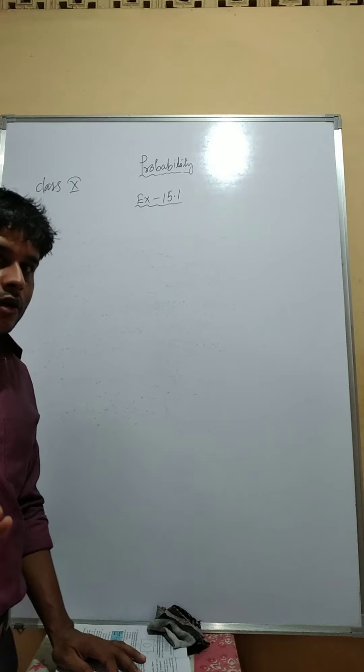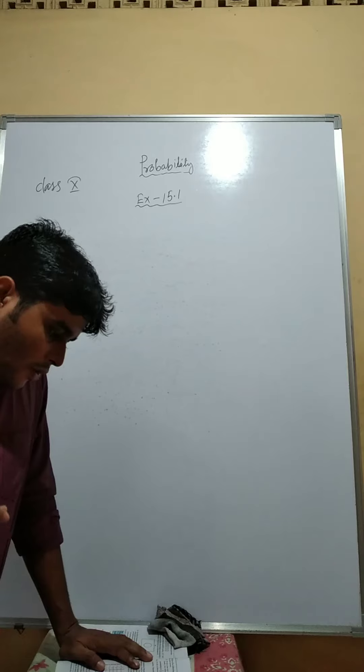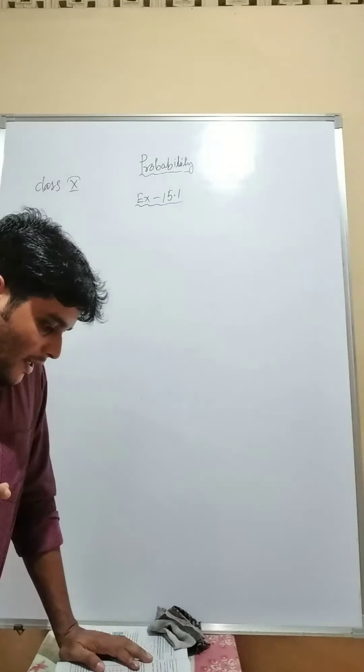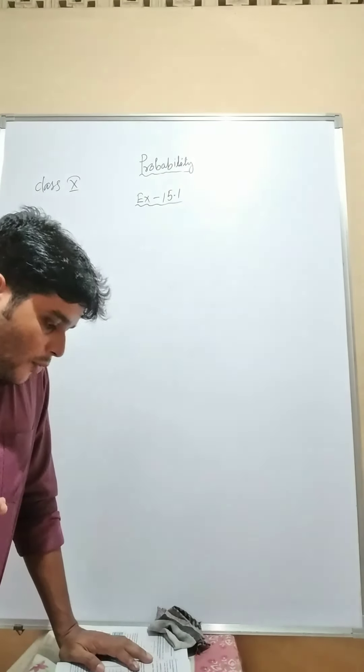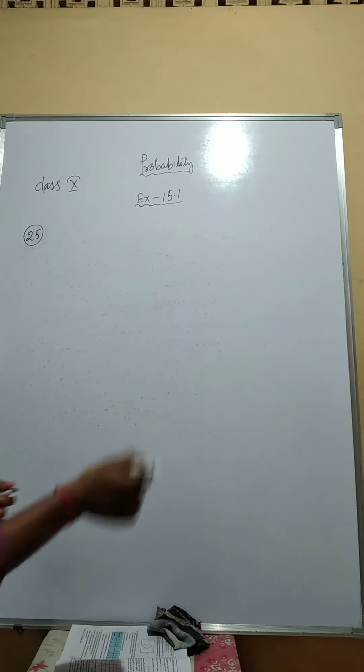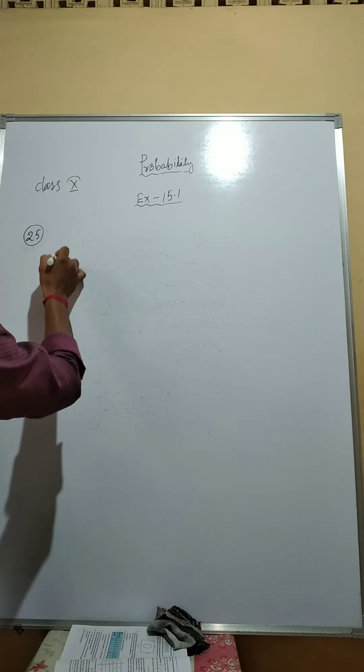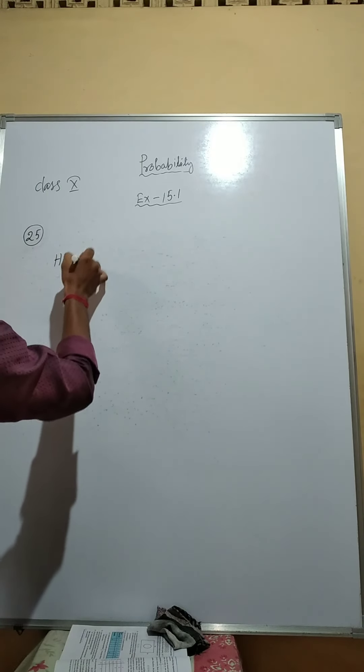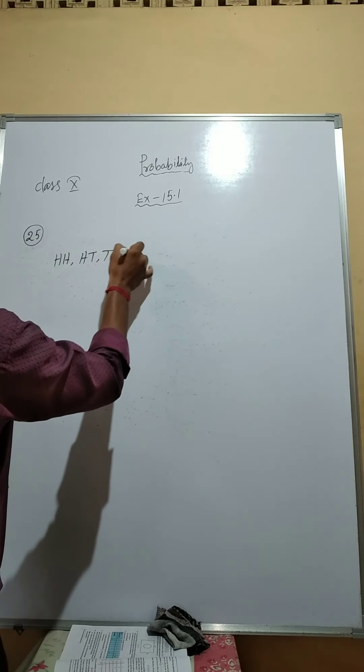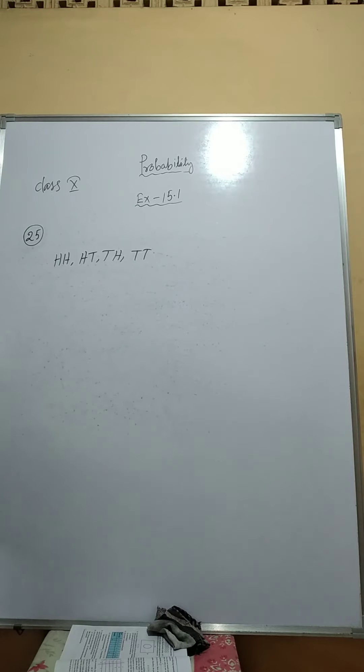The correct one is your result. Now you see, if two coins are tossed simultaneously, there are three possible outcomes. If two coins are tossed, then what are the outcomes? Head-head, head-tail, tail-head, tail-tail. These are the possible outcomes.